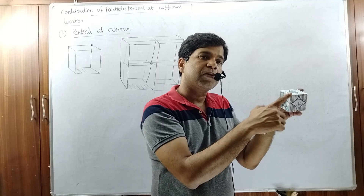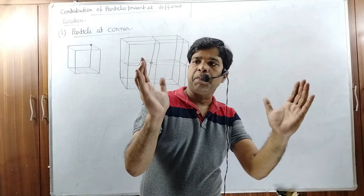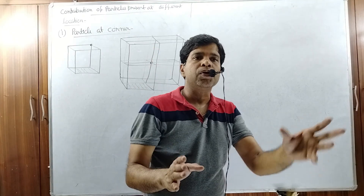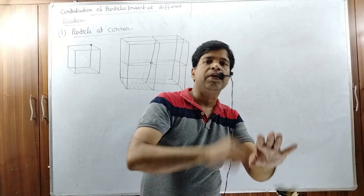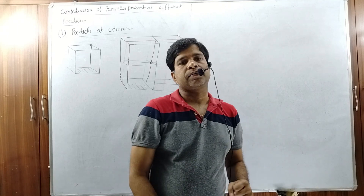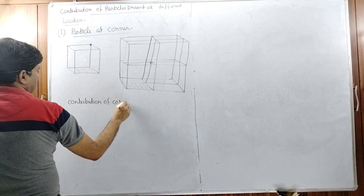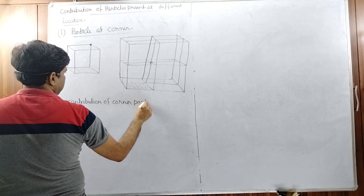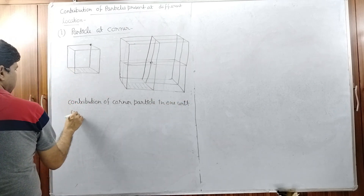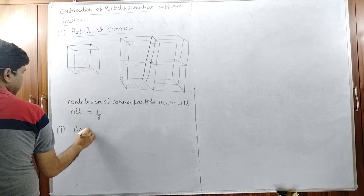Since the particle at the corner is equally present in eight unit cells, its contribution to one unit cell is only one by eight. So the contribution of a corner particle in one unit cell is 1/8.